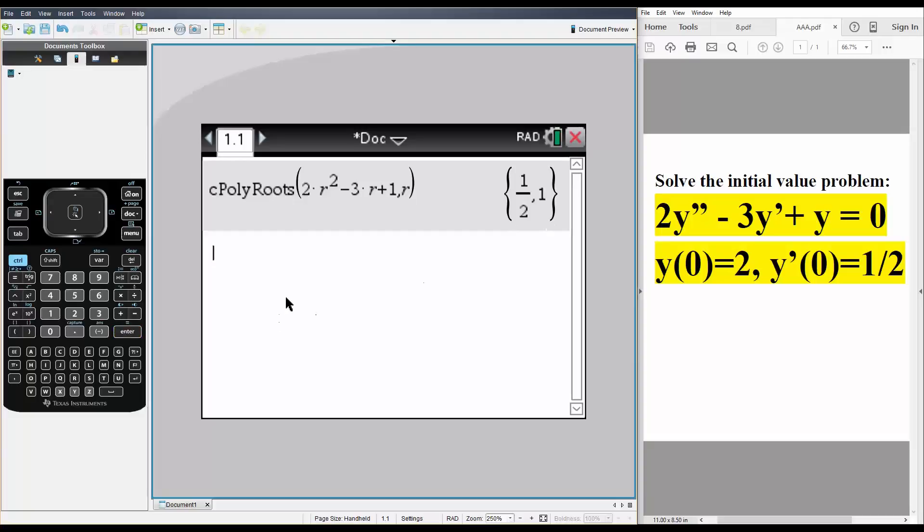And so we can define y as y defined is going to be c1 times e raised to 1 divided by 2 times t, this value, plus c2 times e raised to 1 times t. Simply hit enter and this is what we get so far.